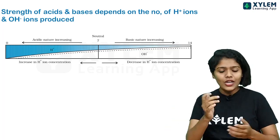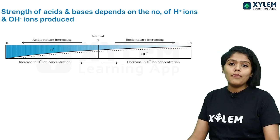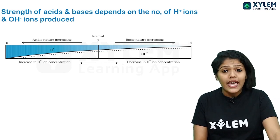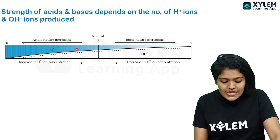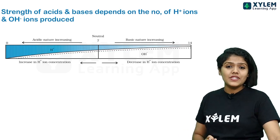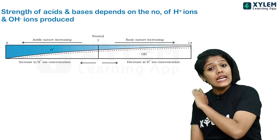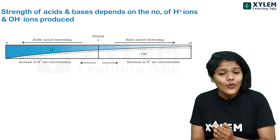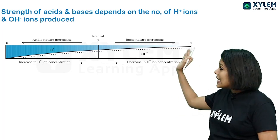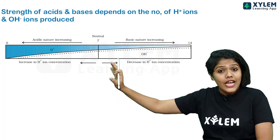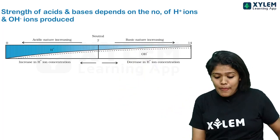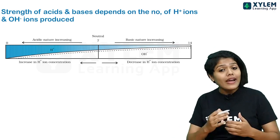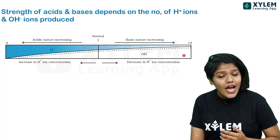We can represent the strength of acids and bases on the pH scale based on the H⁺ ion concentration and OH⁻ ion concentration. As we move from 7 to 0, the H⁺ ion concentration increases — that is what the color change represents. As we move from 7 towards 14, the H⁺ ion concentration decreases and the basic character increases.